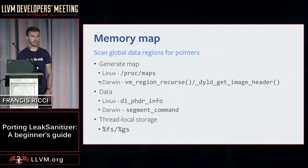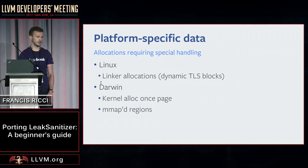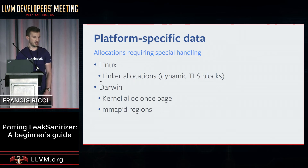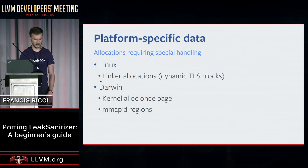Finally, we locate the thread local storage, which is usually stored as some sort of offset in the FS or GS registers depending on the architecture and operating system. The last step is to handle any platform-specific behavior with heap data. On Linux this means we ignore linker allocations by default because they're often dynamic thread local storage blocks. On Darwin it means we ignore pointers stored in the kernel alloc1s page because the system uses this to store singleton data pointers. We also need special handling of memory-mapped regions because they aren't reported by the dynamic loader APIs, so they aren't present in our memory map. Lib-dispatch also uses memory-mapped pages for some pointer storage as well.